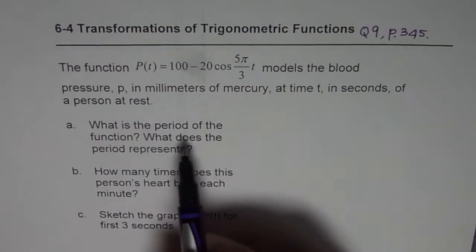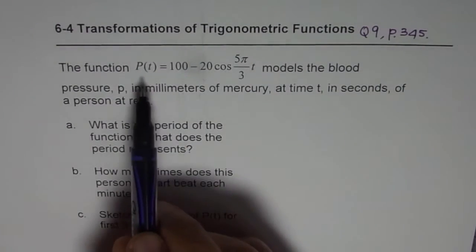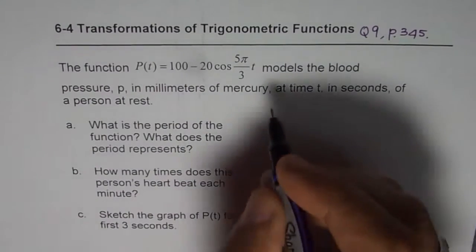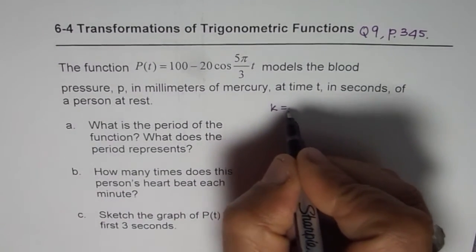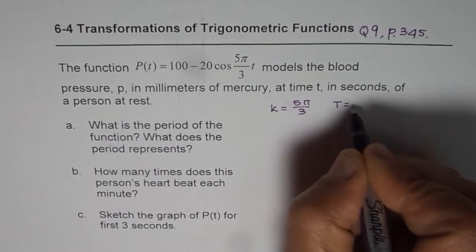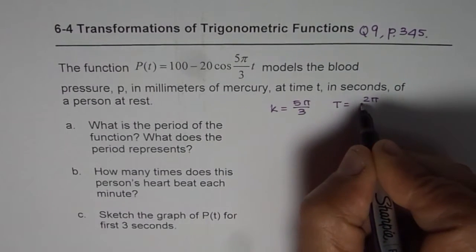Let's begin by finding the period of the function. Since P(t) = 100 - 20cos(5π/3)t, we know that the k value is 5π/3. And therefore, T should be equal to 2π/k.